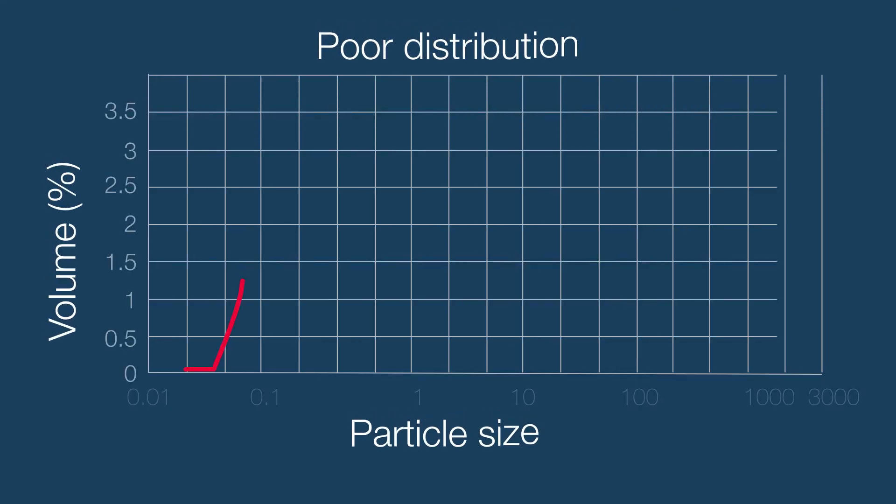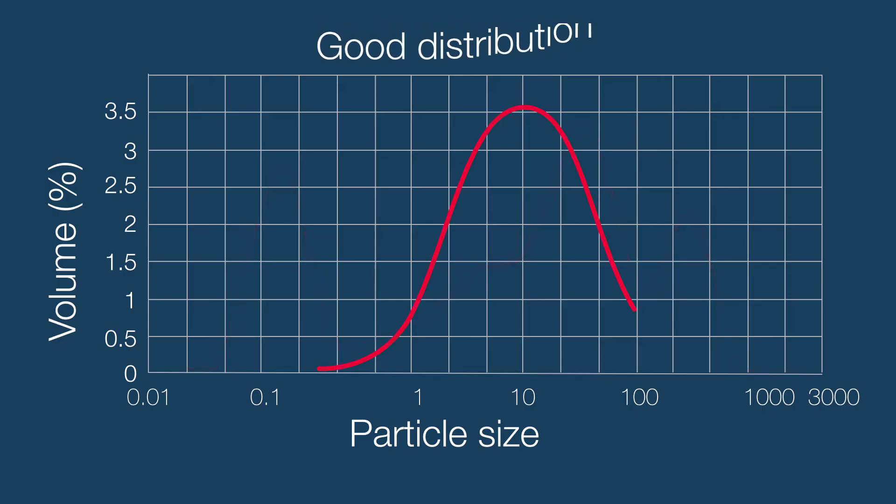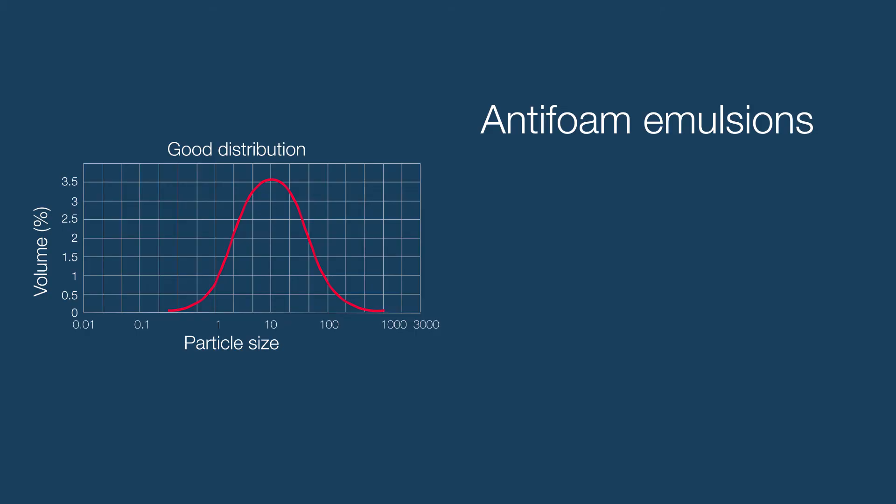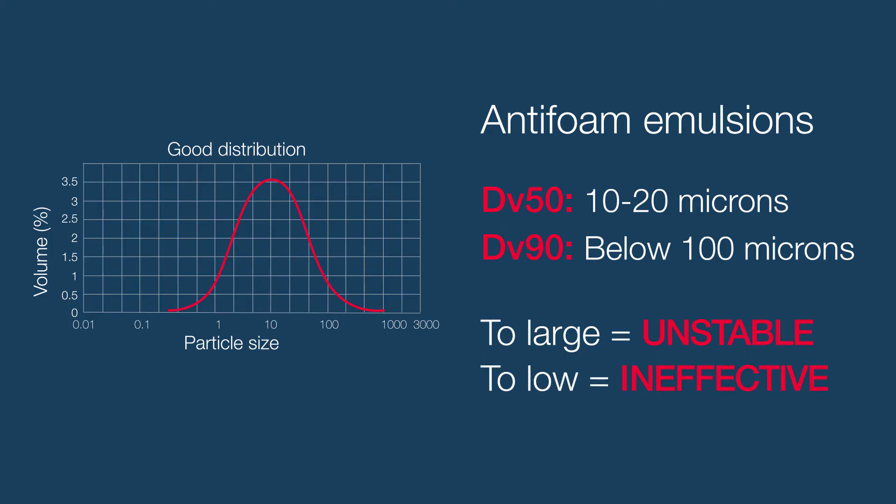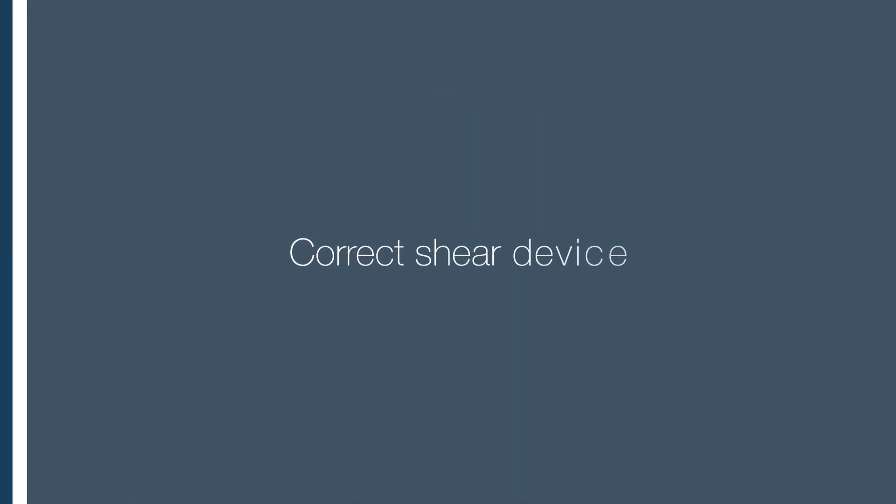Particle size distribution is also important as a stable emulsion will generally have a narrow distribution without any extraneous peaks. The particle size and distribution you target will also depend on the application. For instance, in anti-foam emulsions, you want a DV50 between 10 and 20 microns and a DV90 below 100 microns. If the particle size is too large, the emulsion will be unstable, and if it is too low, it will not be an effective anti-foam.